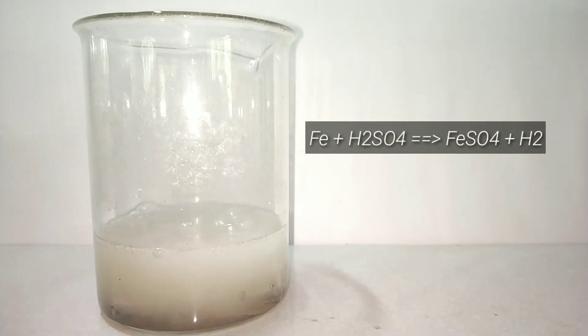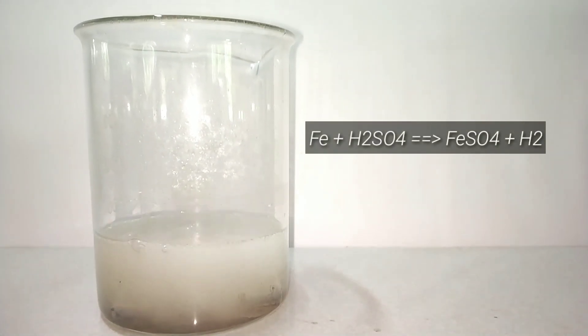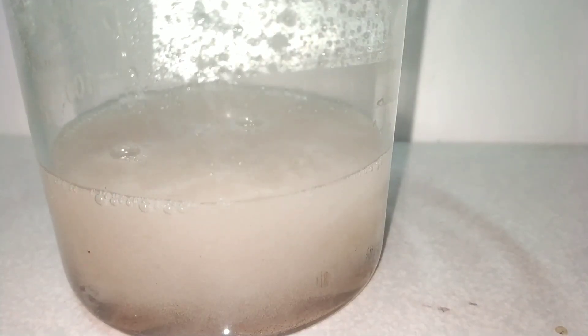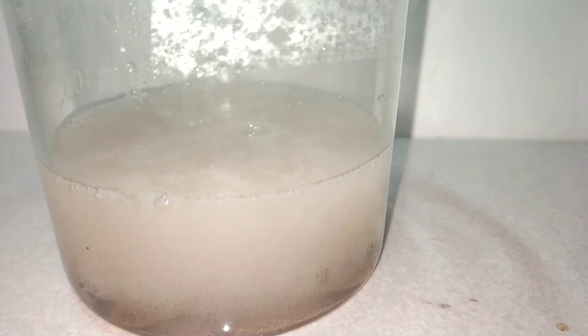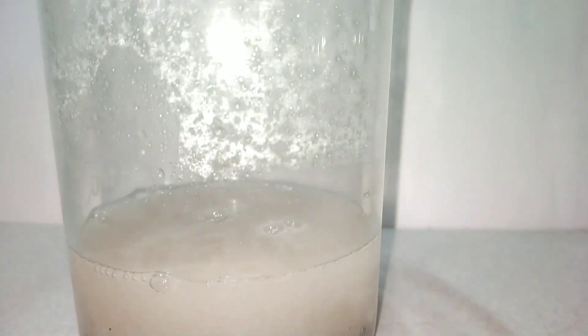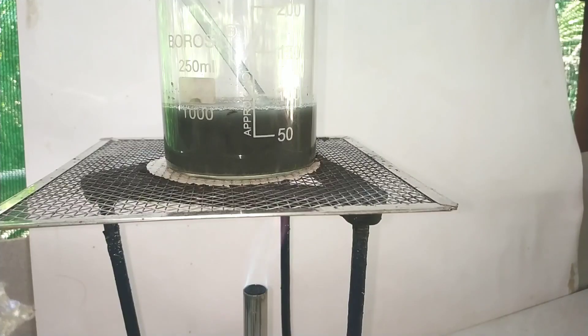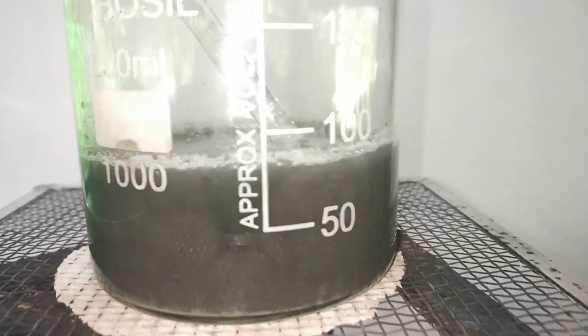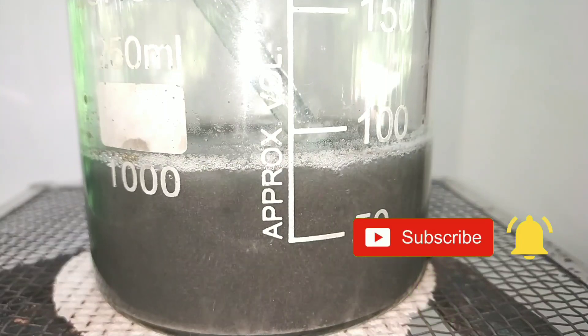After adding the acid we notice a lot of bubbling. Here iron is reacting with sulfuric acid to produce our desired product iron 2 sulfate and hydrogen gas. Hydrogen gas is being liberated as the bubbles. You can also see some brown color depositing that is the unreacted rust or the iron oxides.